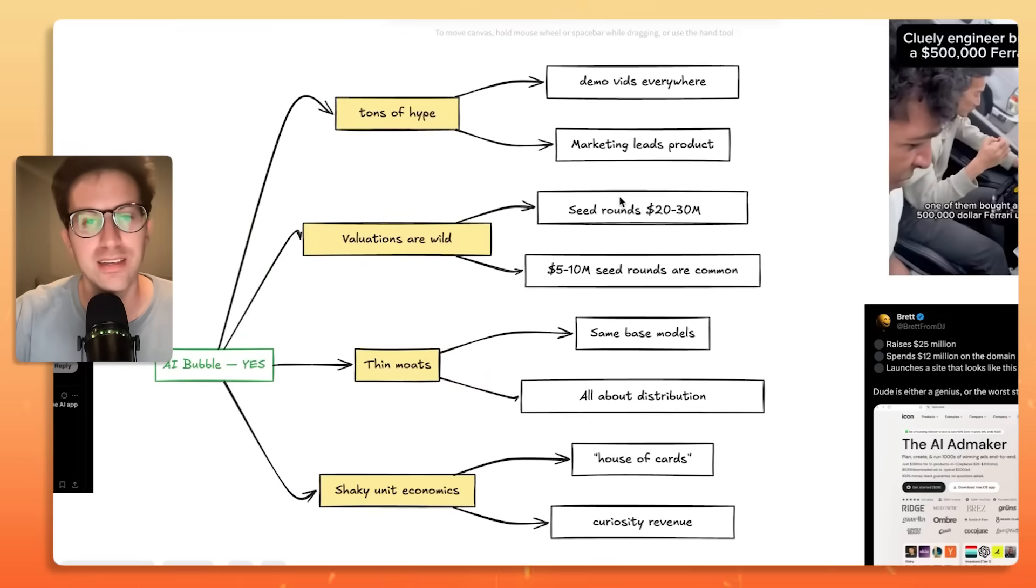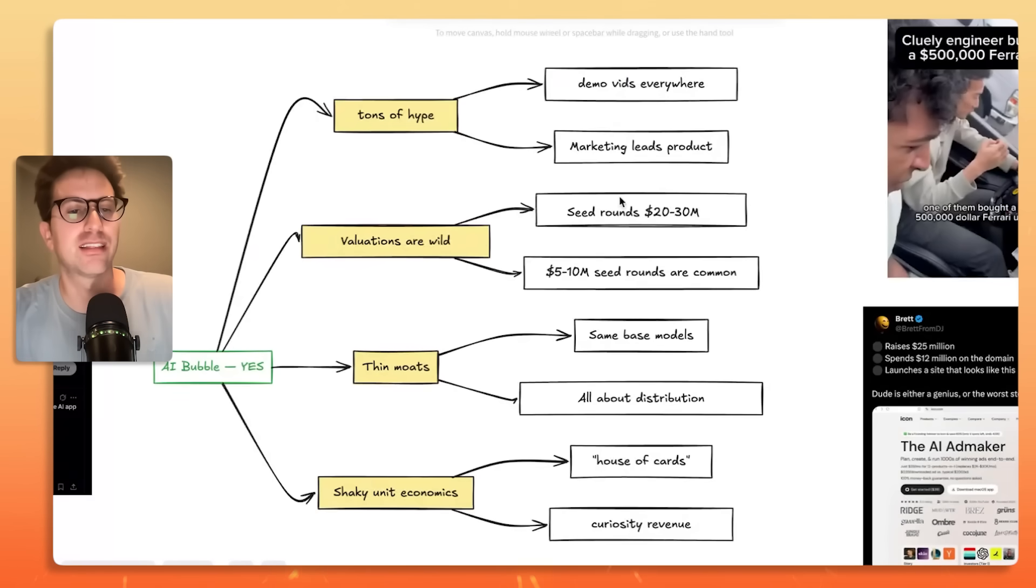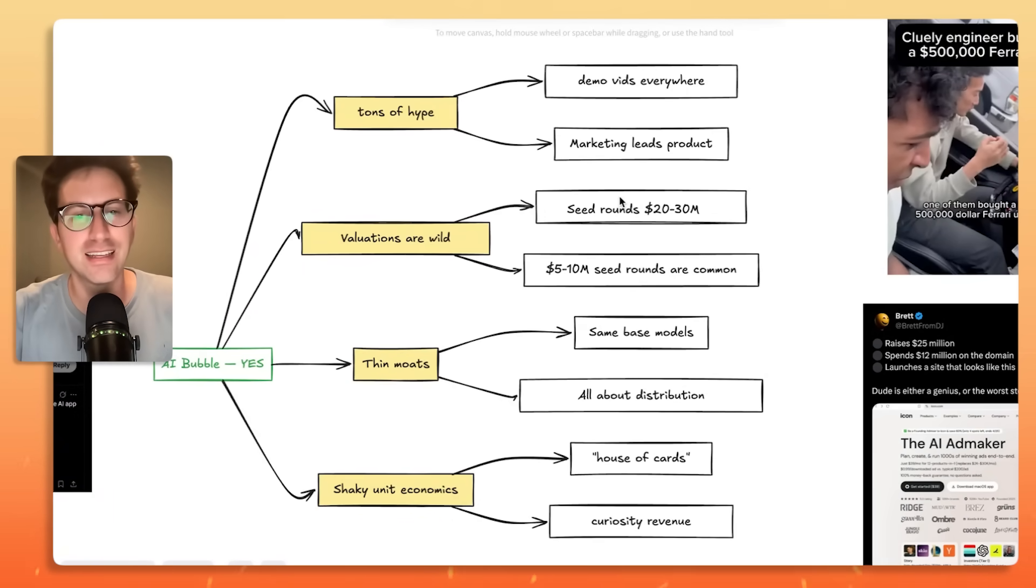But there are a bunch of products that have really good marketing that the product people try it and they're like, it's just not there. The second reason why people say that there's an AI bubble is that the valuations are getting insane. Seed round valuations, it's not uncommon for them to be $20 to $30 million.